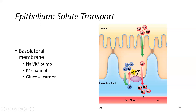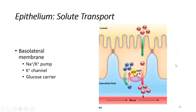The potassium leak channels move potassium passively — they open and allow potassium to move according to its gradient, from high to low concentration. The facilitated glucose carriers move glucose according to its gradient but require a transporter, which is facilitated diffusion. These structures embedded in the basolateral membrane help facilitate transport from the luminal surface into the underlying capillaries.